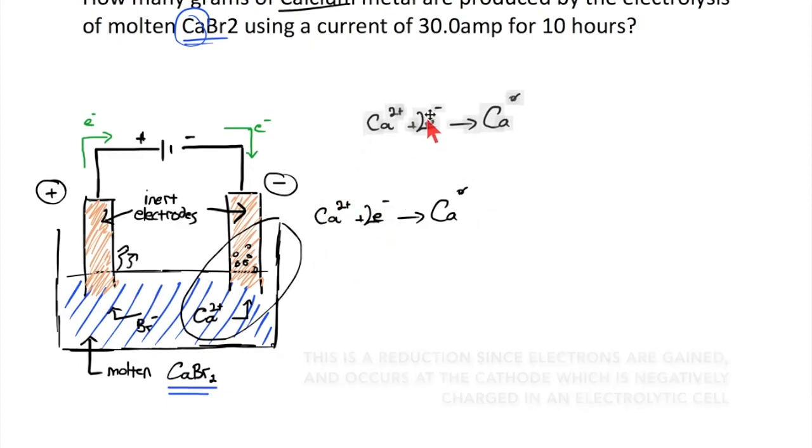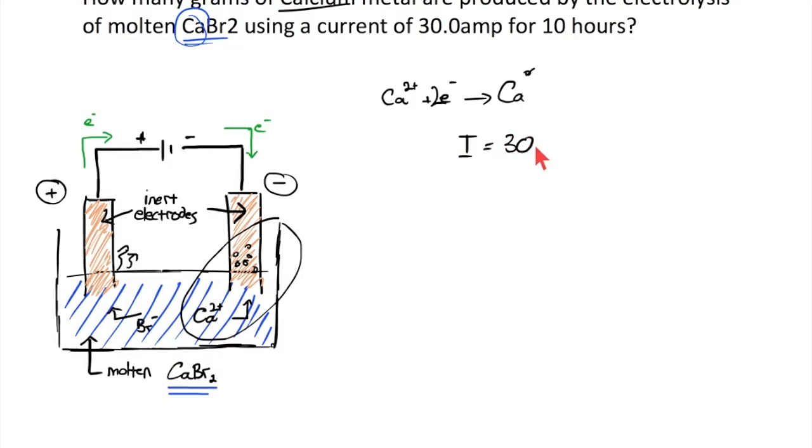That implies that it would be helpful to think about the electrons that are being transferred here and then use that information to figure out what's going on with the calcium that's being formed. So we're told that a current of 30 amps is being passed through this thing and that this is occurring over a time of 10 hours.